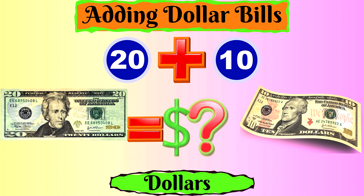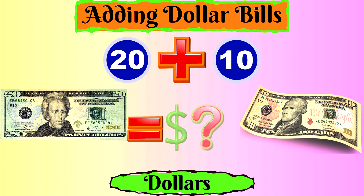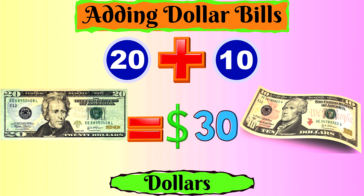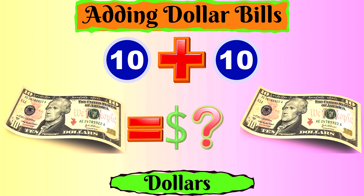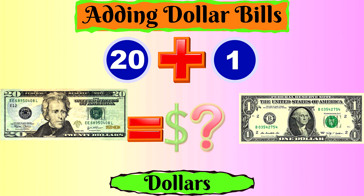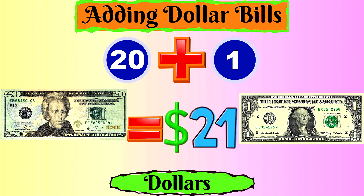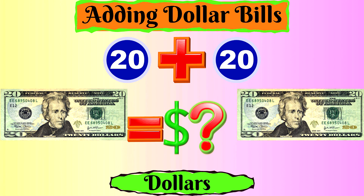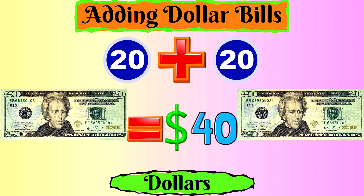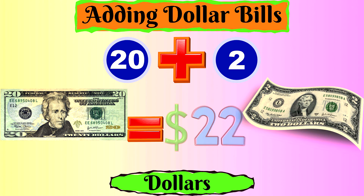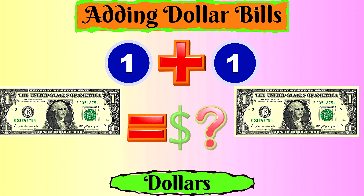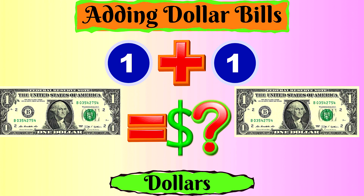Twenty dollars plus ten dollars equals thirty dollars. Ten dollars plus ten dollars equals twenty dollars. Twenty dollars plus one dollar equals twenty-one dollars. Twenty dollars plus twenty dollars equals forty dollars. Twenty dollars plus two dollars equals twenty-two dollars. One dollar plus one dollar equals two dollars.